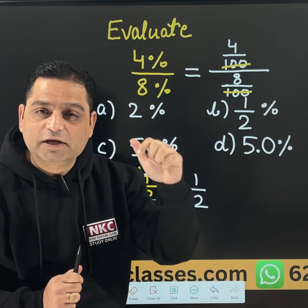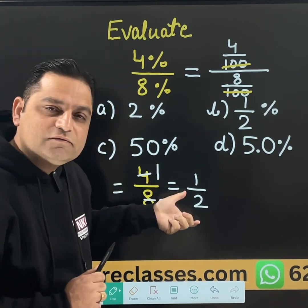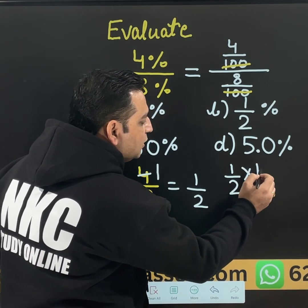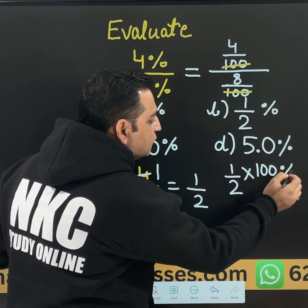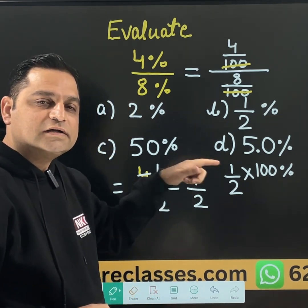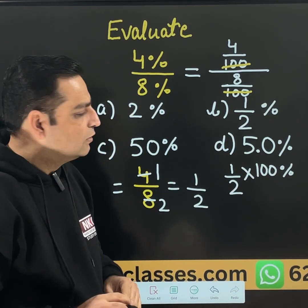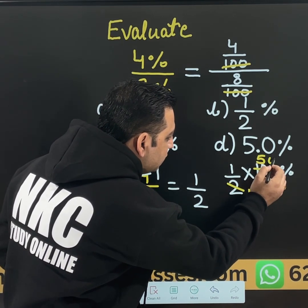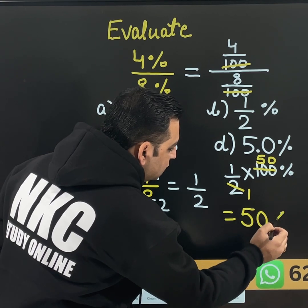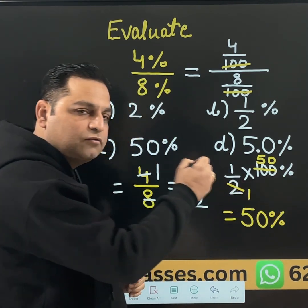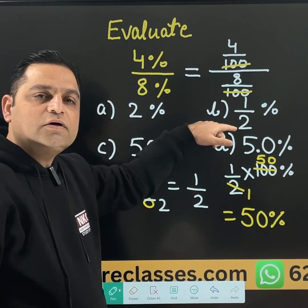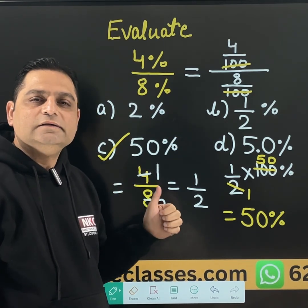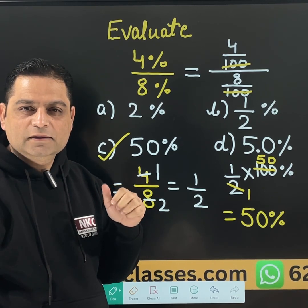That means I need to recall the concept of converting a fraction into percent. How to convert a fraction into percent? I am having 1 over 2. If 1 over 2 is the fraction, you just need to multiply it by 100% to get the answer in percentages. Now, 1 over 2 multiplied by 100 — if you simplify, you are getting 50. And obviously, the percent sign along with it. So according to the options, C option is the correct option.